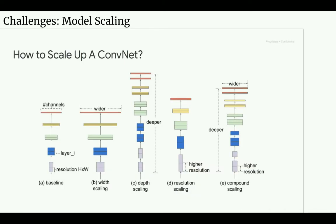Now let's get to model scaling. Rather than introducing one model, we introduce a family of models so people with different use cases can pick the one they prefer. There are multiple ways to scale up models: width scaling increases the number of channels in each layer; depth scaling increases the number of layers (as in ResNet-18, ResNet-34); resolution scaling passes in a higher resolution image for finer-grained patterns; and compound scaling — explored by EfficientNet — scales all three factors simultaneously.